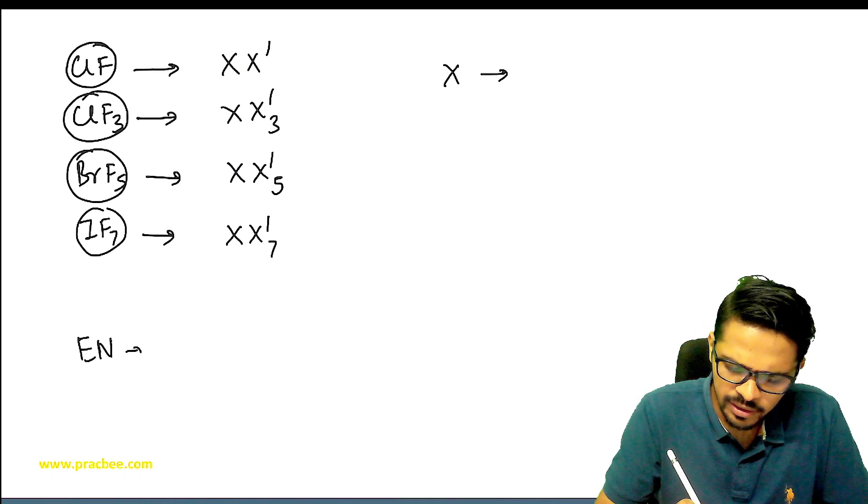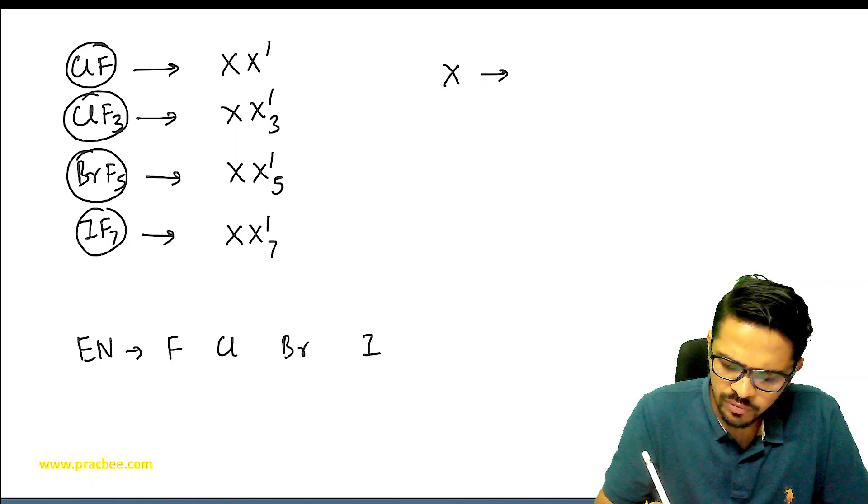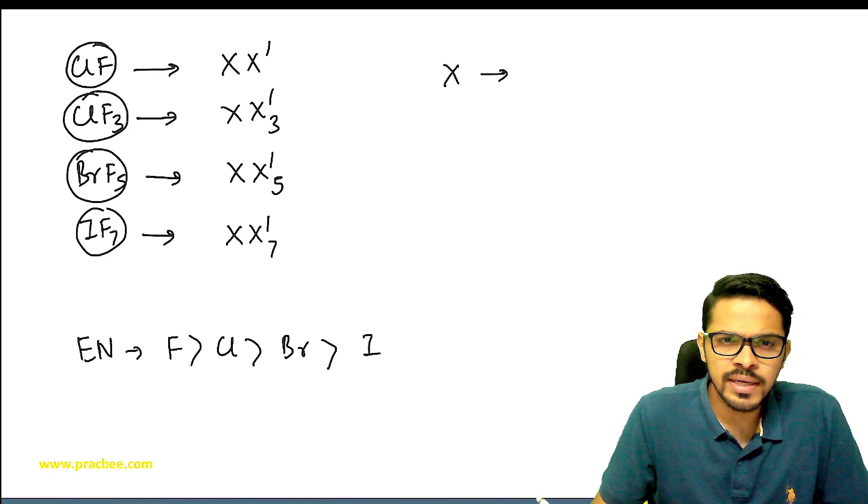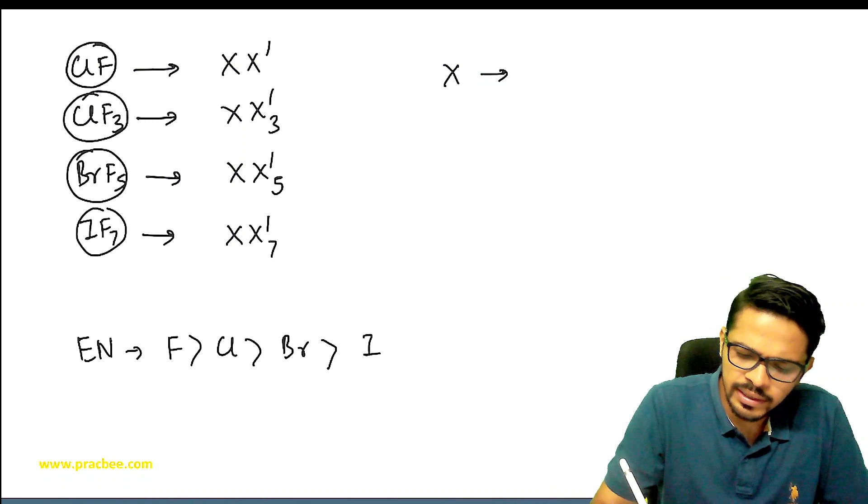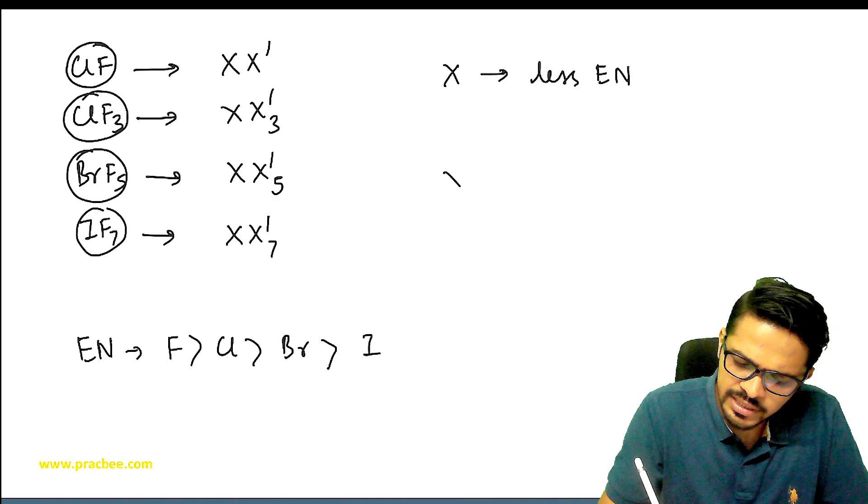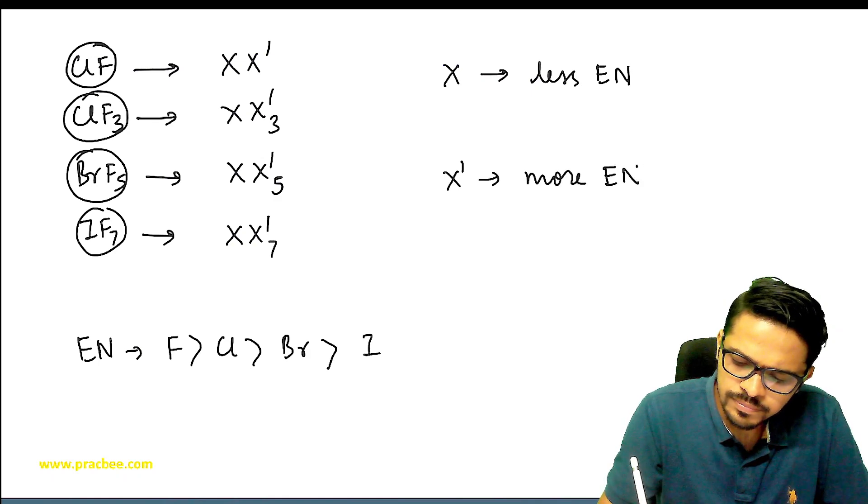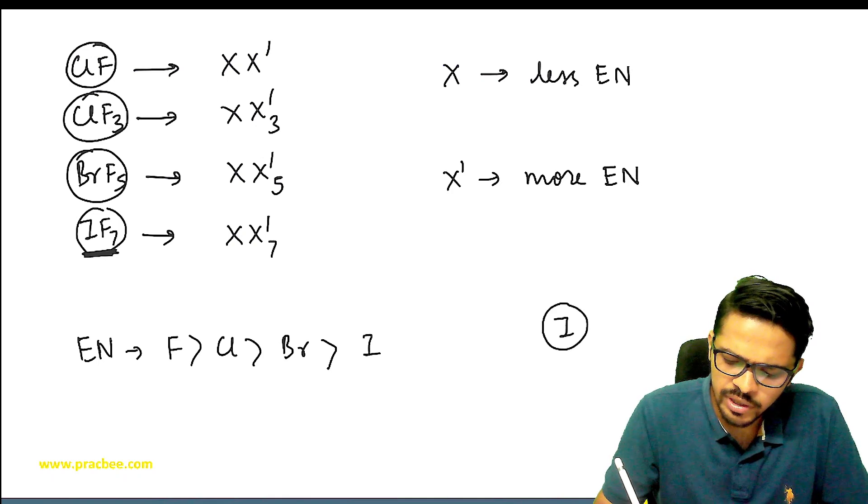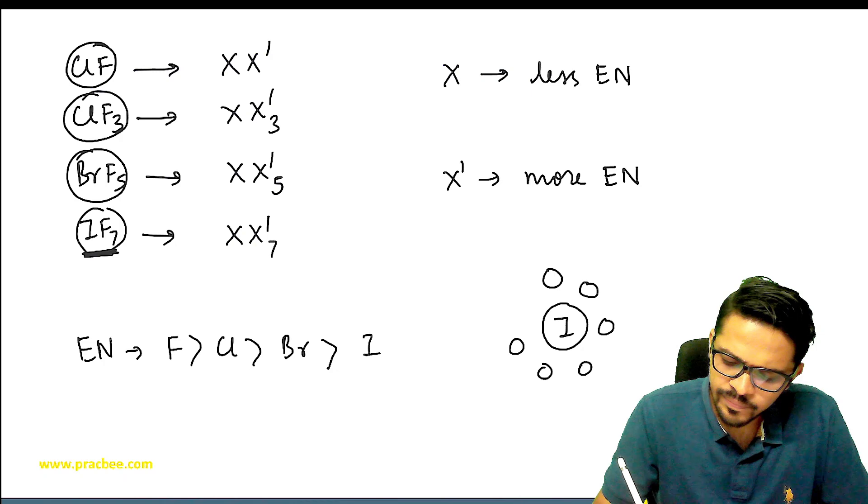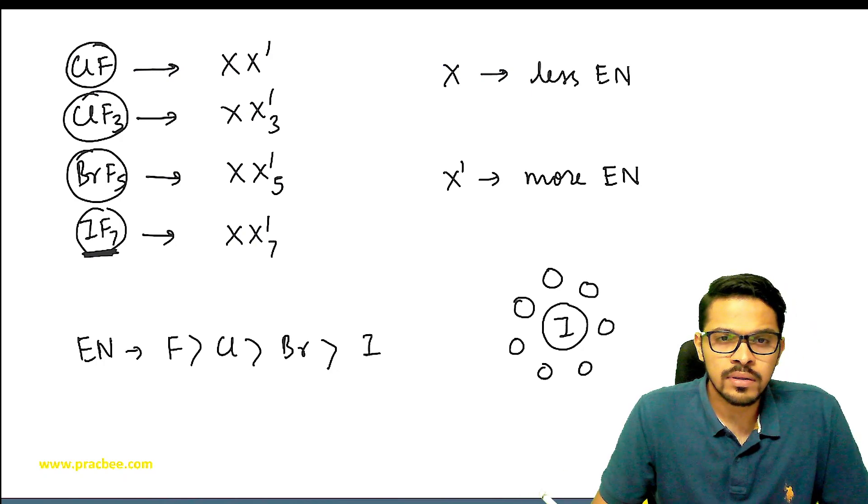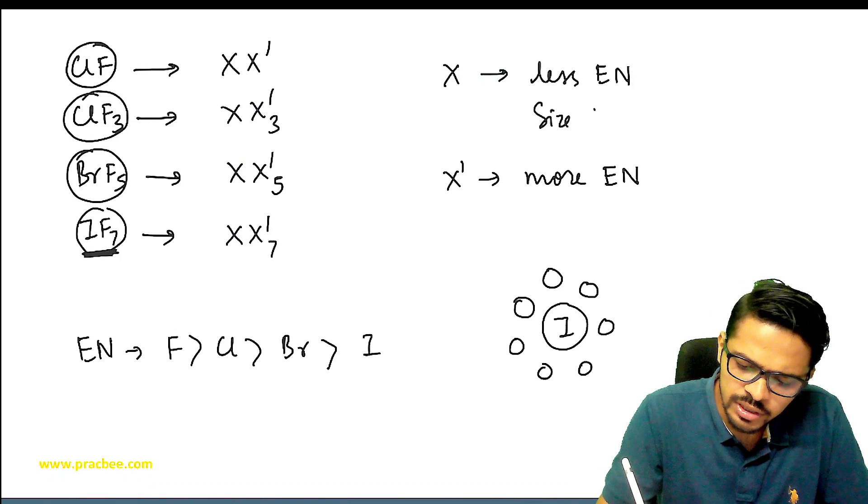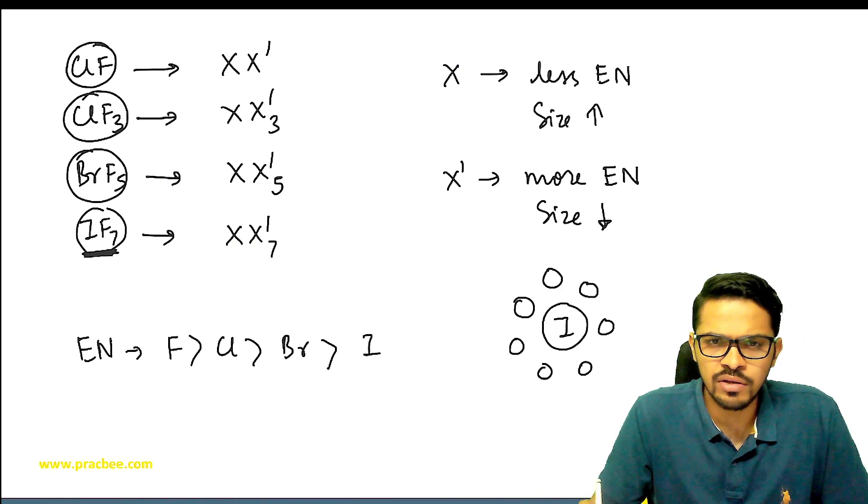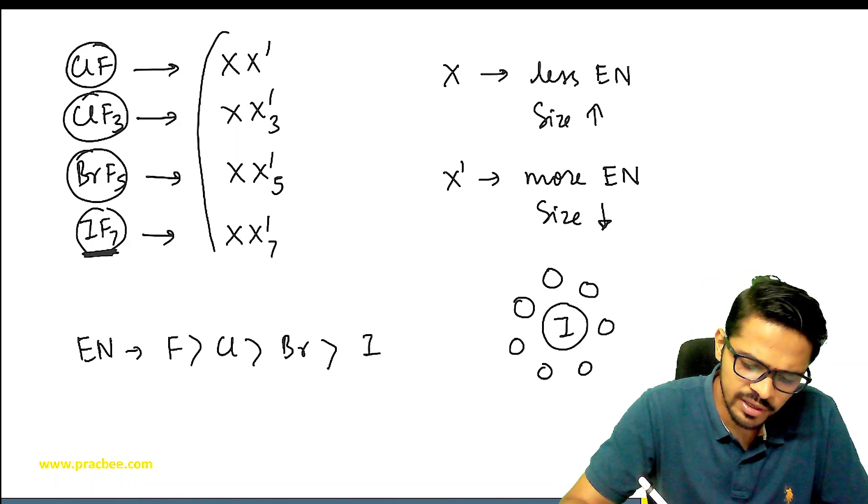Talking about electronegativity, out of fluorine, chlorine, bromine and iodine, which one is more electronegative? Fluorine is more electronegative. So the X compound is the less electronegative element, X' is the more electronegative element. Talking about size, if in IF7 iodine has to accommodate seven fluorines, then iodine's size is large. So X's size is large, X' size is small.